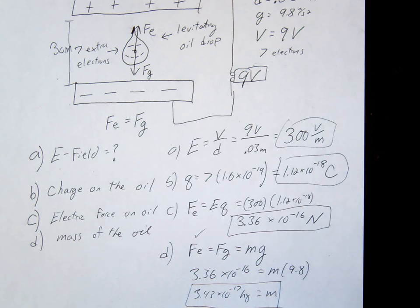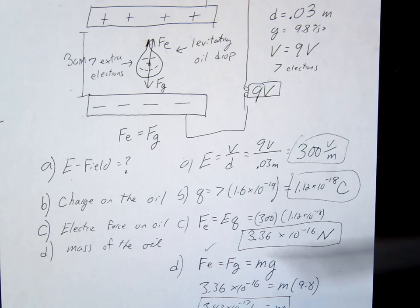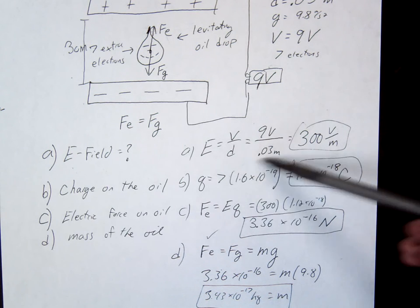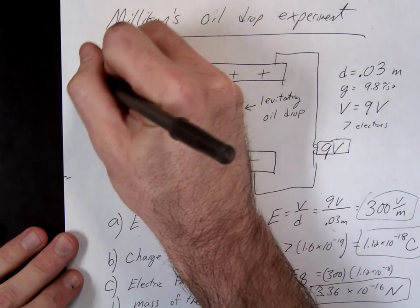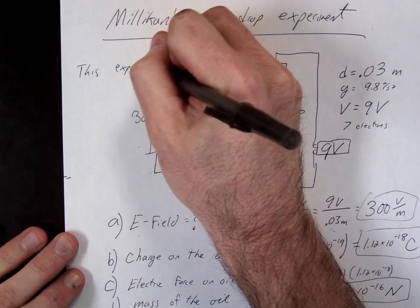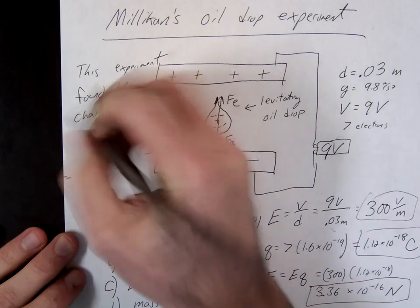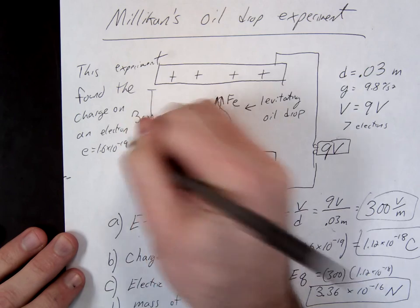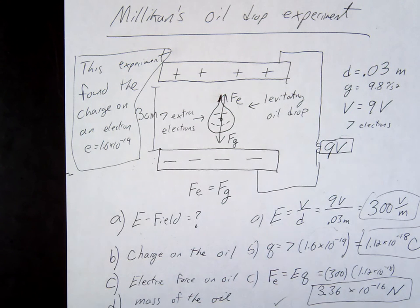So Milliken, when he did this experiment, actually worked backwards from what we did. He knew the mass of the oil and worked in reverse to ultimately find Q — specifically, what the value of Q actually is. Before Milliken, no one knew what that number was. So this experiment calculated the charge on a single electron: 1.6×10⁻¹⁹ coulombs. This was the experiment that figured out the charge on a single electron.